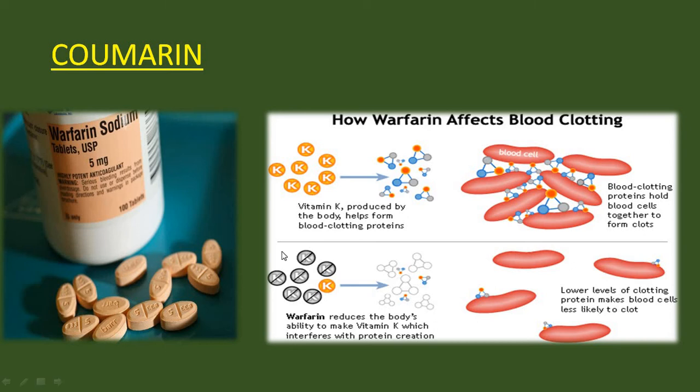How does the coumarin group of drugs like warfarin affect blood clotting? Warfarin reduces the body's ability to make vitamin K, which interferes with protein creation. Vitamin K is responsible for the formation of blood clotting factors, so by reducing vitamin K, warfarin indirectly reduces the factor level in blood. That is how it affects blood clotting proteins.